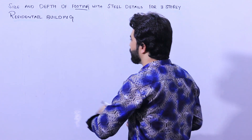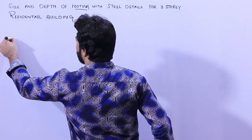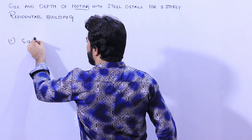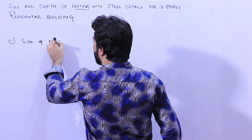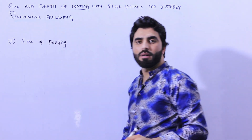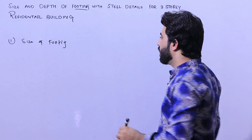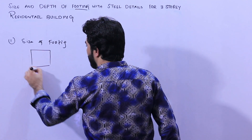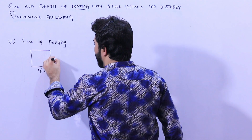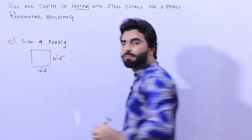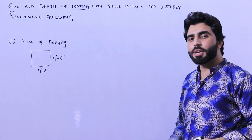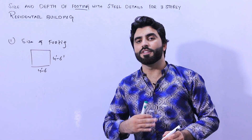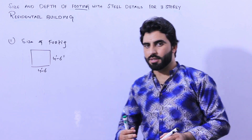If you are new on this channel, please like the video and subscribe for more civil engineering updates. The first topic is the size of footing. Remember, the size of footing for a three-story residential building should not be less than four feet six inches by four feet six inches, because we don't know about the bearing capacity of soil, so we increase the factor of safety.